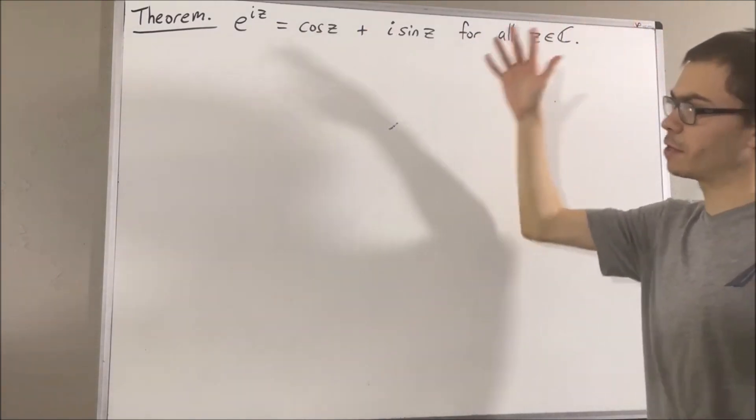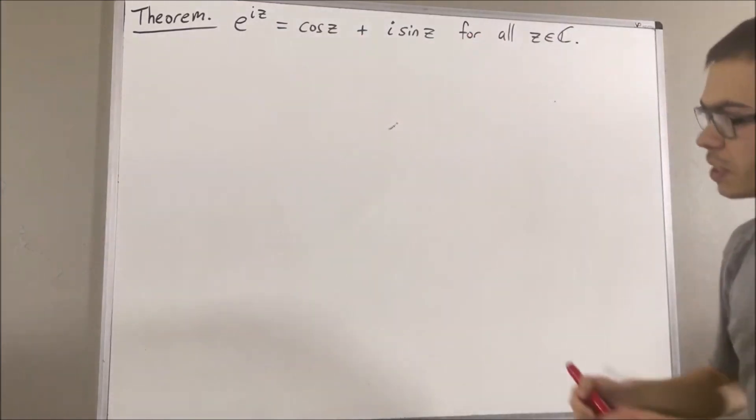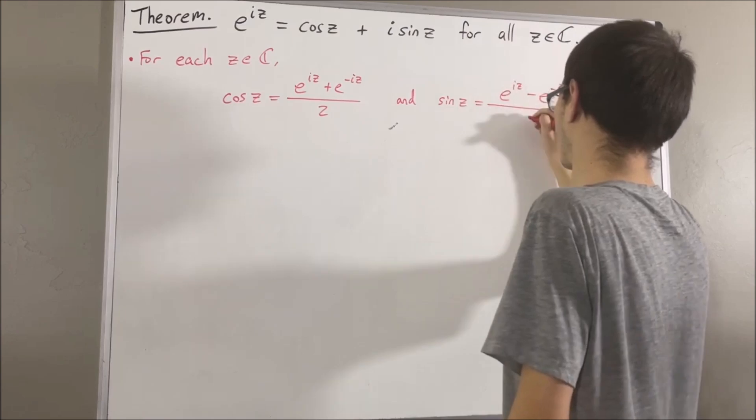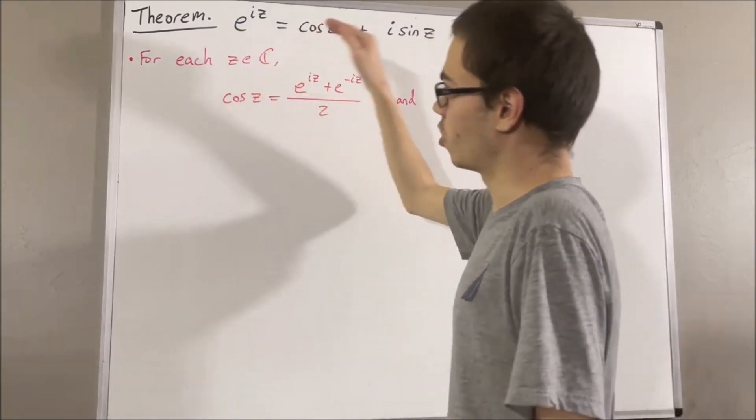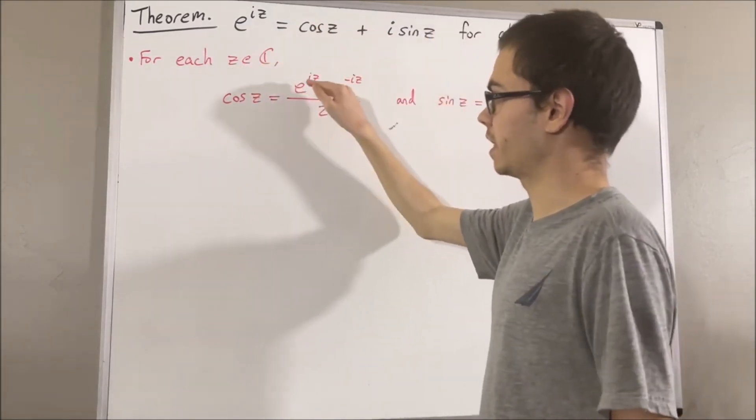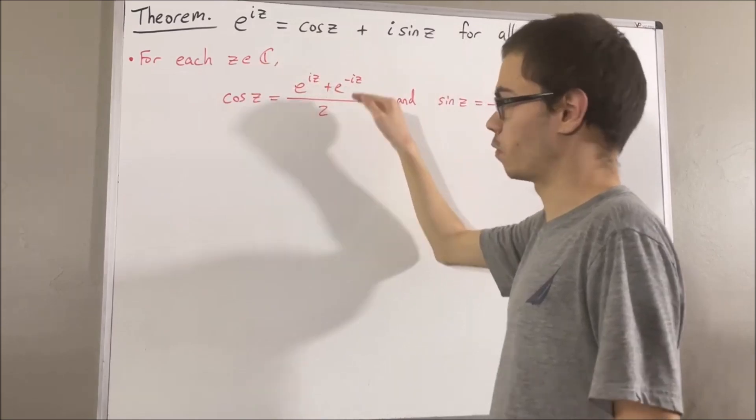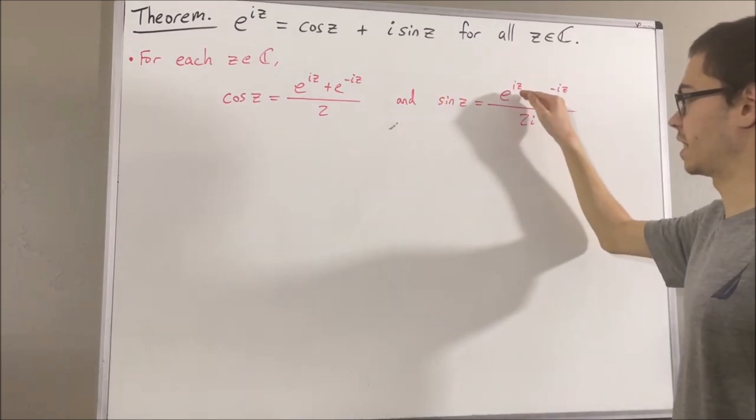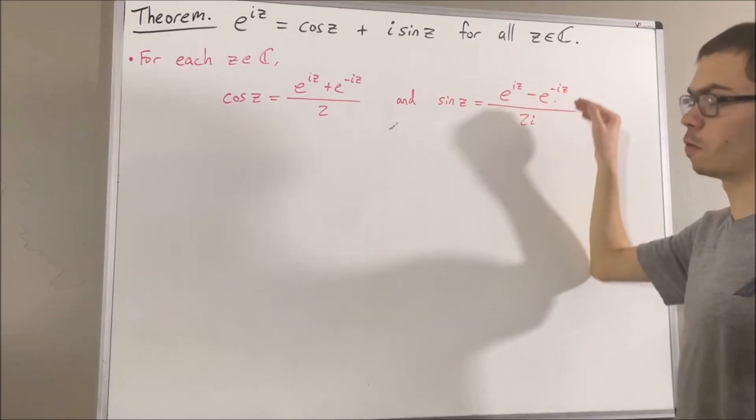Now, our definition of cosine and sine are as follows. For each complex number z, we define the cosine of z to be e to the iz plus e to the negative iz over 2, and we define sine of z to be e to the iz minus e to the negative iz over 2i.